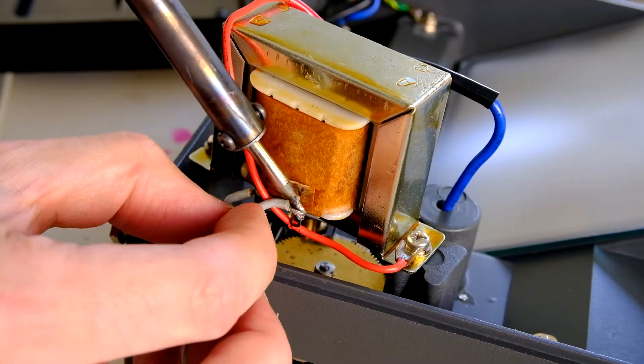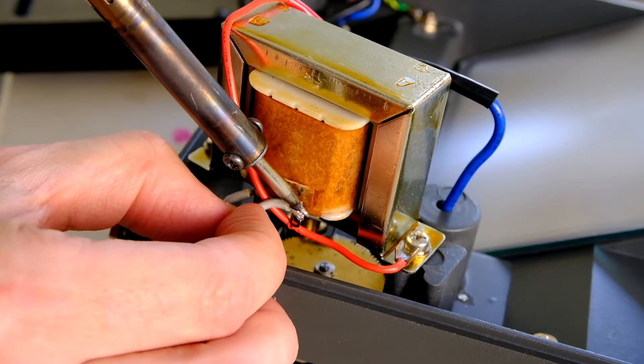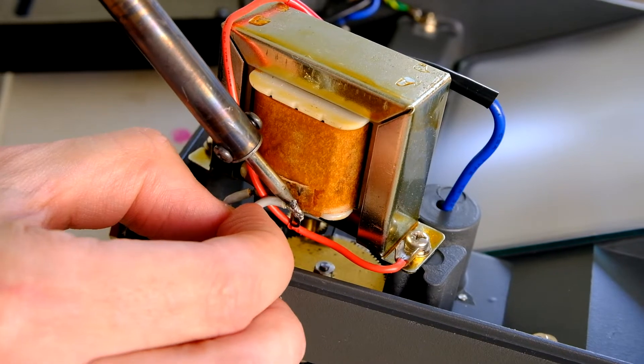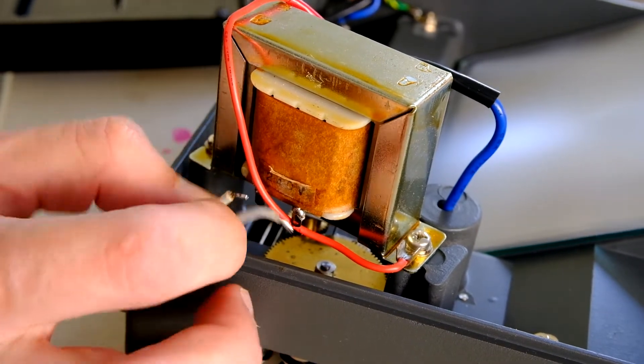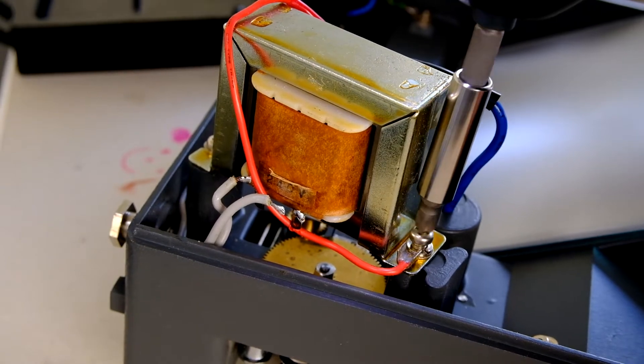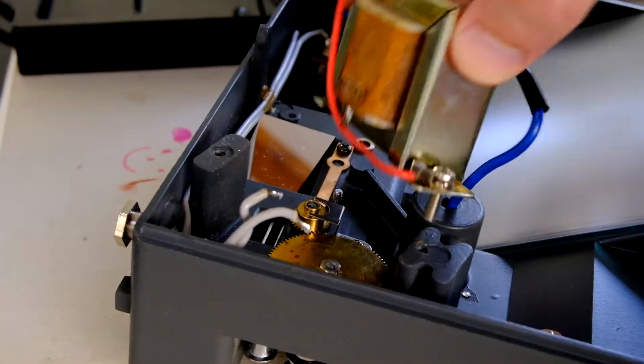Then just remove the transformer by desoldering the wires, unscrew it. There's just a short cable to clip off.